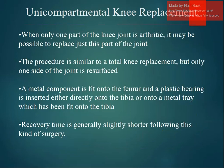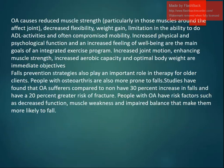In unicompartmental replacement, if only one part of the knee joint is arthritic it may be possible to replace only that part — either the femoral or tibial side. The procedure is similar to a total knee replacement but only one side is resurfaced. A metal component is fitted onto the femur and a plastic bearing is inserted either directly onto the tibia or onto a metal tray fitted onto the tibia. Recovery time is generally slightly shorter.